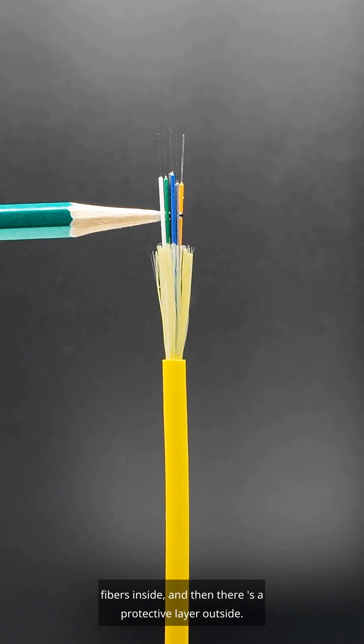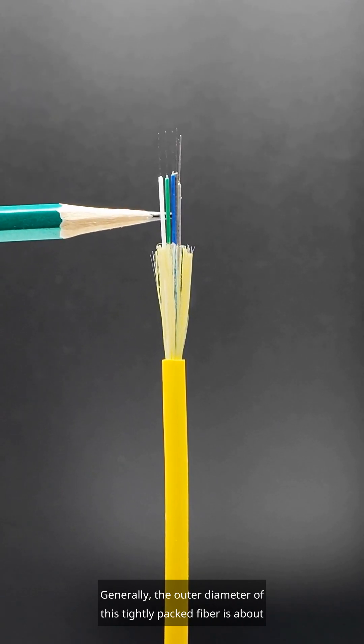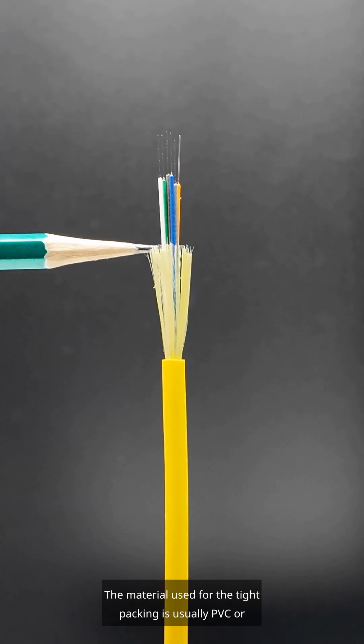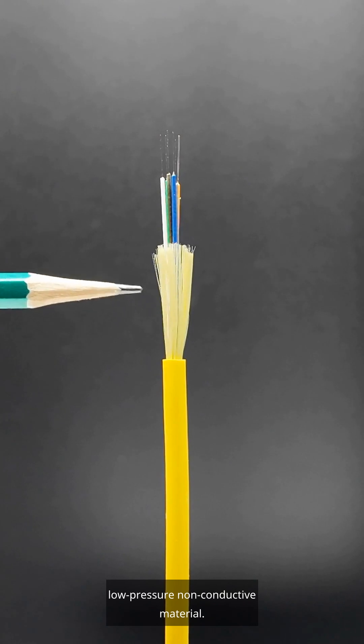Generally, the outer diameter of this tightly packed fiber is about 0.6 or 0.9 millimeters. The material used for the tight packing is usually PVC, or low pressure, non-conductive material.